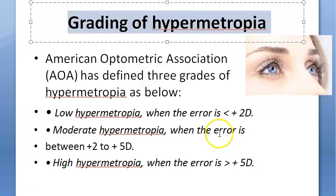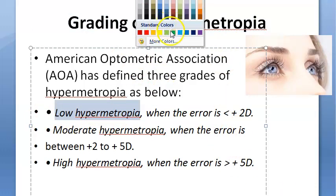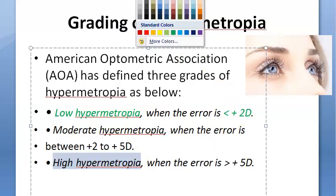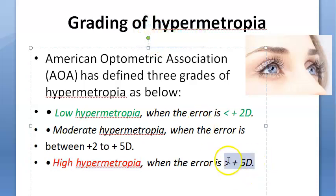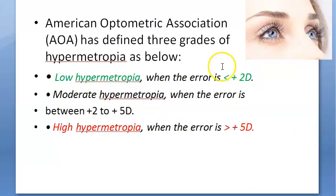Grading of hypermetropia: low is less than 2 diopters, moderate is between 2 and 5 diopters, and high is greater than plus 5 diopters.